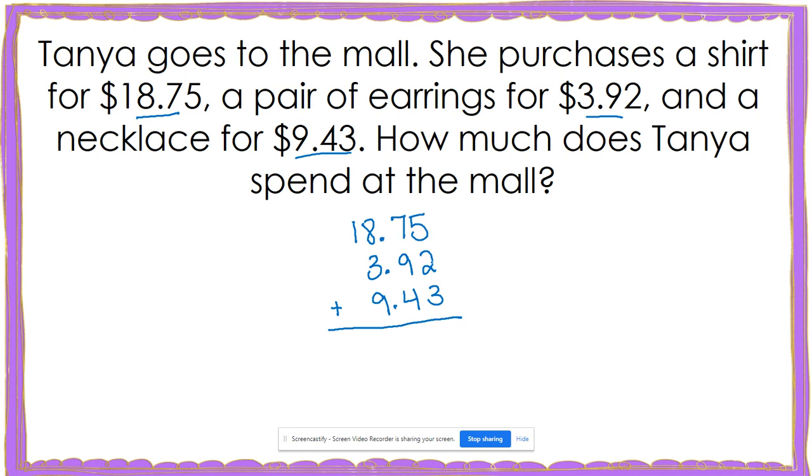Five plus two is seven. Seven plus three is 10. So I write my zero and carry my one. One plus seven is eight. Eight plus nine is 17. 17 plus four is 21. So I write my one and carry my two. I'm going to bring down my decimal so I don't forget.